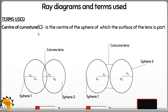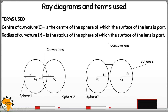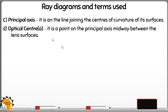Let us look at the terms used. A lens comes from two spheres, as seen in both concave and convex lenses. The center of curvature is the center of the sphere of which the surface of the lens is part. The radius of curvature is the radius of that sphere. The principal axis is the line joining the two centers of curvature — a horizontal line joining them.